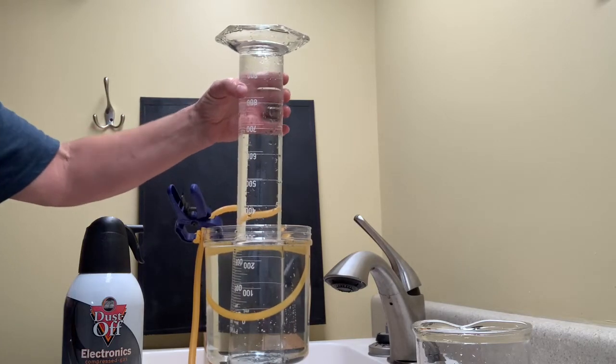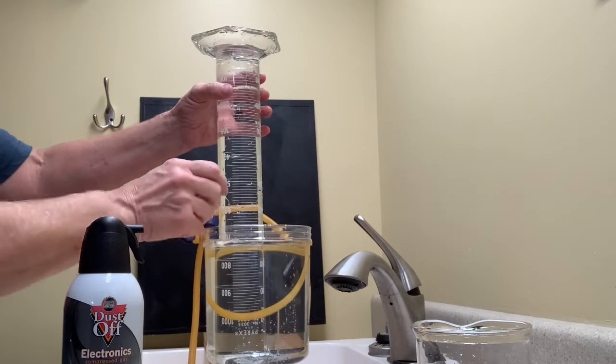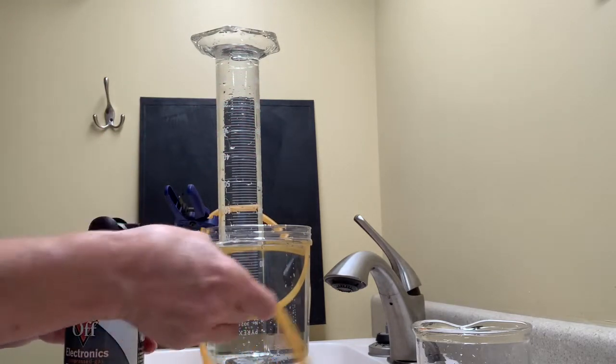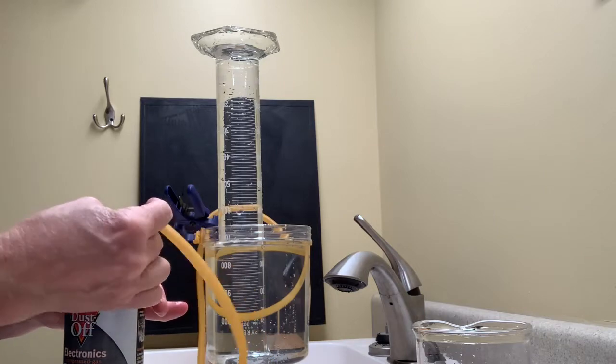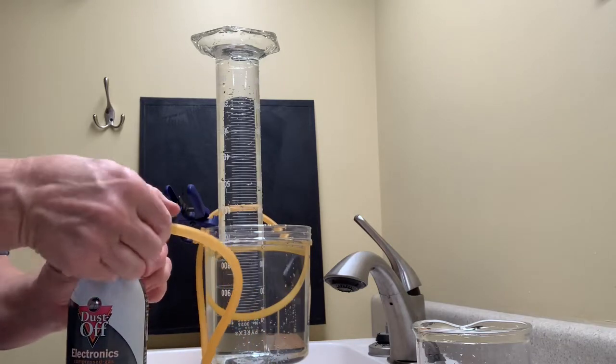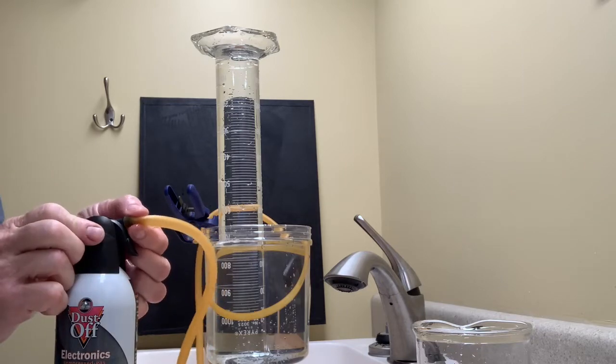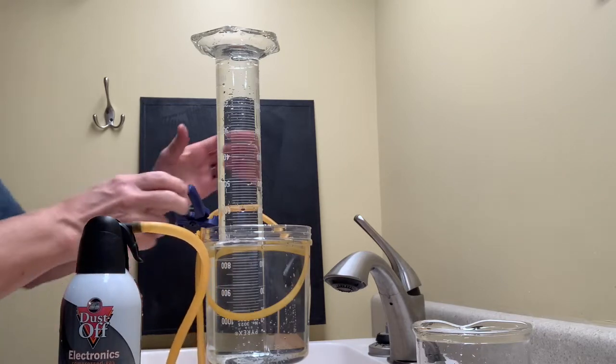And now I'll hook the hose there. Get that cylinder steady. Hook the hose onto the dust off canister. And then submerge the hose up underneath the graduated cylinder.